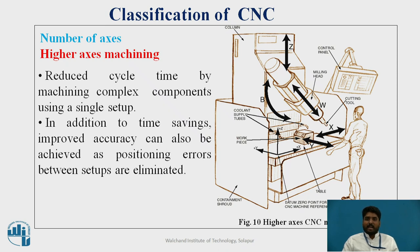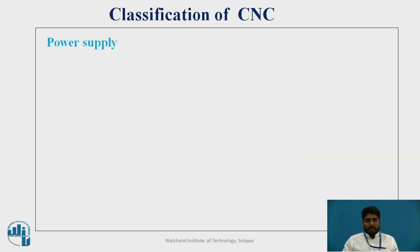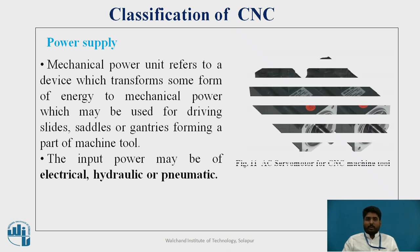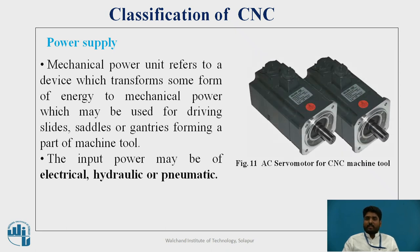Figure 10 shows higher axis machining where the number of axes is more than 10 or 12. Lastly, we will see the power supply classification. A mechanical power unit refers to the device which transforms some form of energy into mechanical power, used for driving slides, saddles, or gantries forming part of the machine tool. The input power may be electric, hydraulic, or pneumatic. The figure shows an AC servo motor for a CNC machine tool.